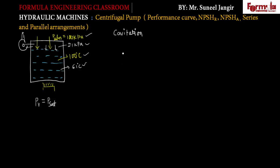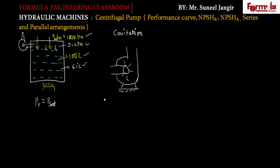Let's suppose this is our pump. This is the impeller eye — the point where the fluid enters the pump. The fluid is entering at this point because here the pressure is less than the atmospheric pressure, or when the impeller runs the pressure at this impeller eye is going to be decreased.